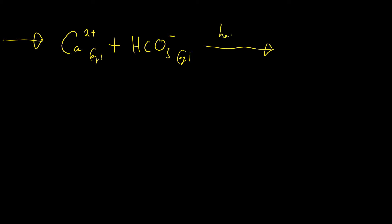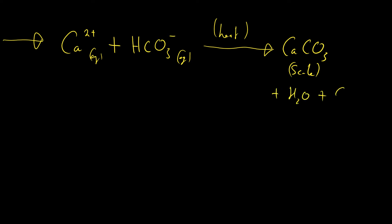When we boil — heat goes above the arrow as a condition, not as a chemical — we get calcium carbonate, which is our limescale, plus water plus carbon dioxide. This equation needs to be balanced with two hydrogen carbonate ions on the left to account for the two carbons on the right. Calcium carbonate is a solid, water is written as liquid, and carbon dioxide is given off as a gas — that's why you see the bubbles.